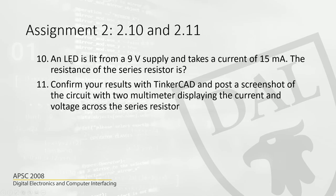An LED is lit from a 9 volt supply and takes a current of 15 milliamperes. The resistance of the series resistor is what we need to find. You just have to plug in the voltage, assume the voltage drop across the LED as two volts, and plug in all those numbers to get the resistance of the series resistor. Confirm your results with Tinkercad and post a screenshot of the circuit with two multimeters displaying the current and voltage across the series resistor.